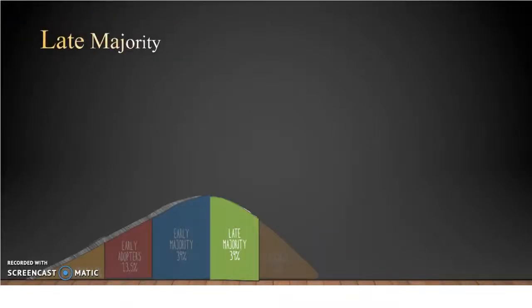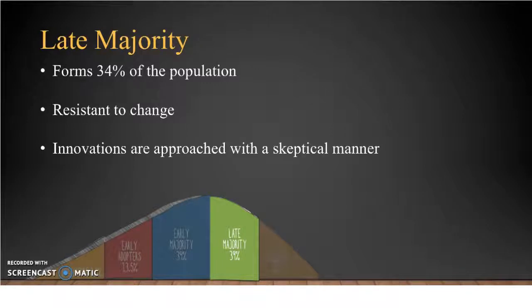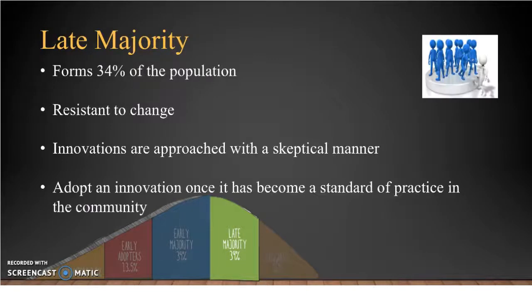Late majority consists of about 34% of the total population. This adopter category consists of individuals who are resistant to change. Innovations are usually approached in a skeptical or cautious manner. In order to adopt a new idea, all of the uncertainty about the innovation must be eliminated. They adopt an innovation once it has become a status quo or a standard of practice in the community.